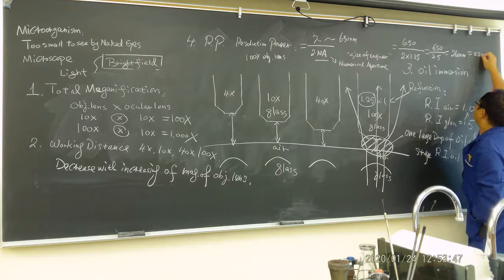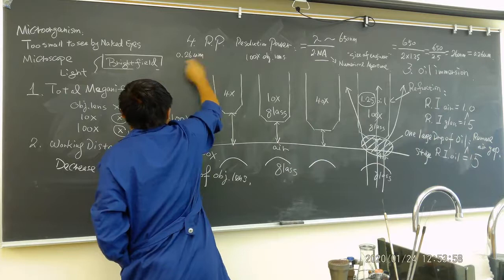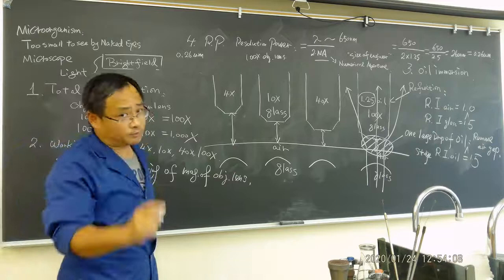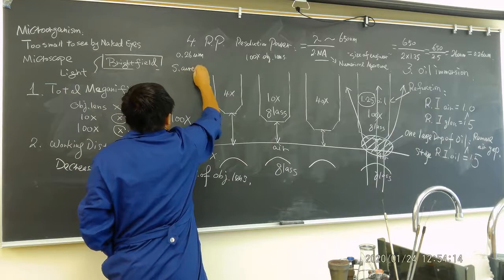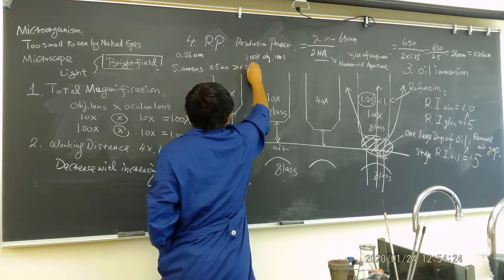Now why it is important? This 0.26 micrometer will determine how good the microscope is. So here is the question: why we use light field microscope can do the observation of Staphylococcus aureus we're going to do right quick? Because the size of Staphylococcus aureus is 0.5 micrometer. This is larger than 0.26 micrometer of the resolution power. Therefore we can see it.